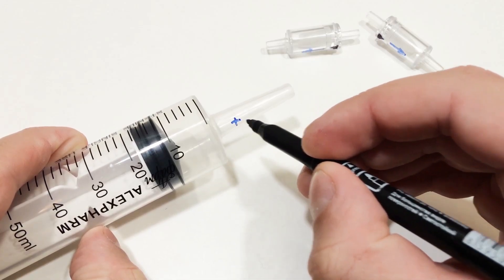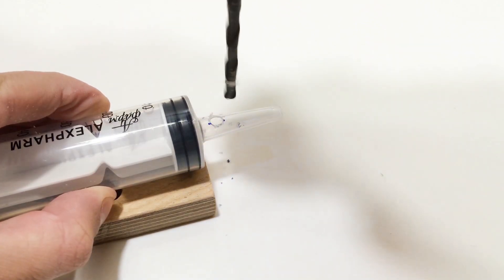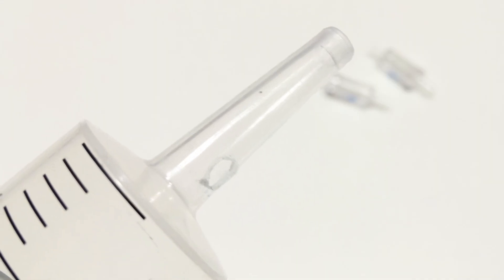First, attach the valves to the syringe so that one allows air in and the other lets it out. To do that, mark the spot and carefully drill a hole in the side of the syringe.